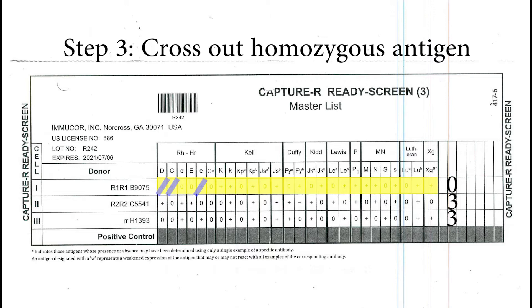We are skipping CW because there is no expression on donor RBC. For K antigen, this donor expresses K as heterozygous because there are positive symbols in both big K and little K. We cannot use heterozygous cells to rule out either big K or little K. Continue working on crossing out using the same logic for the remaining antigens.